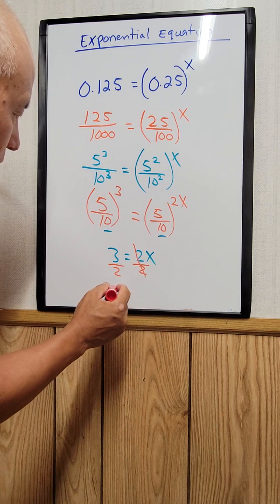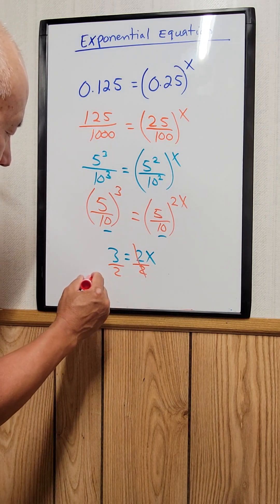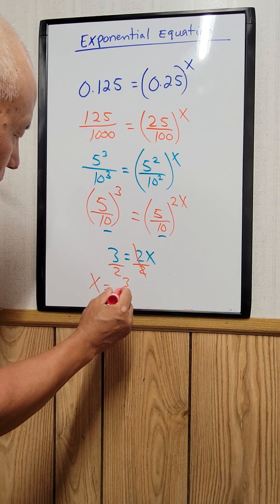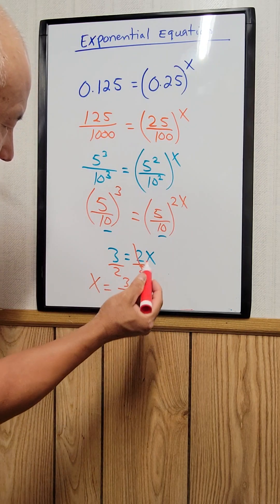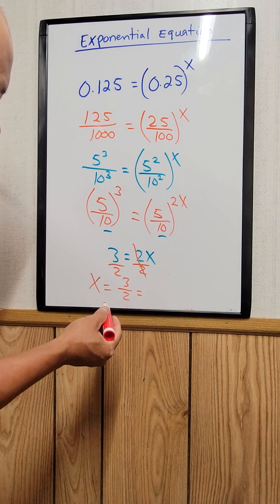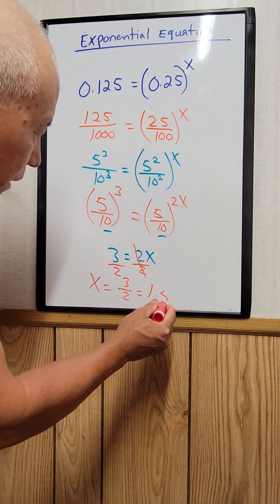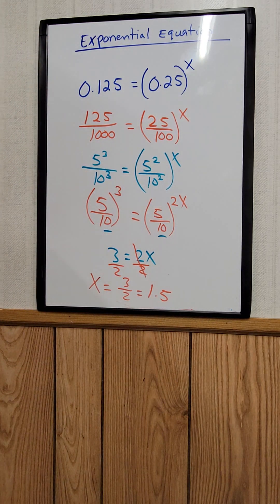To find x, divide both sides by 2 — the 2s cancel out — so x is equal to 3 over 2, or in decimal, 1.5. That's your answer. Thank you so much for watching. If you like my videos, please like, share, and subscribe. Bye bye!